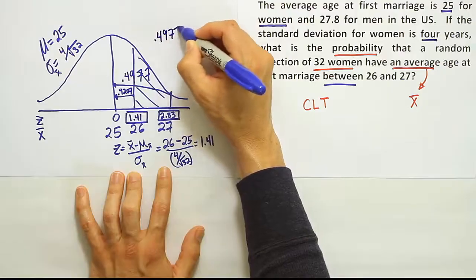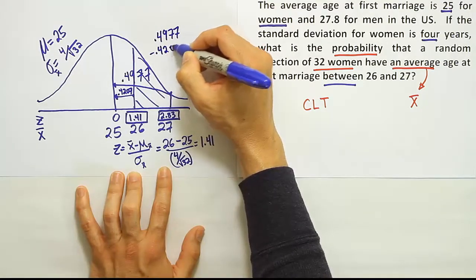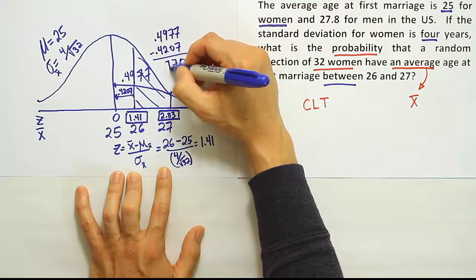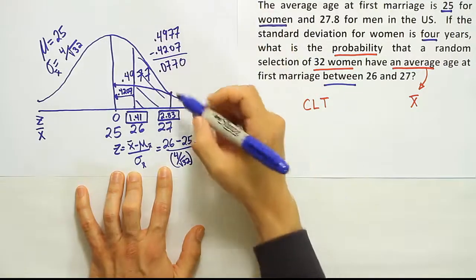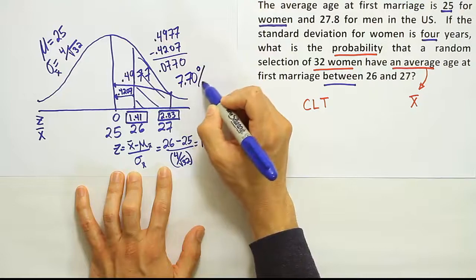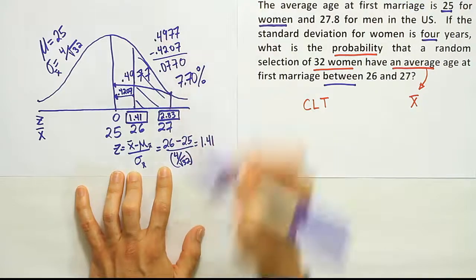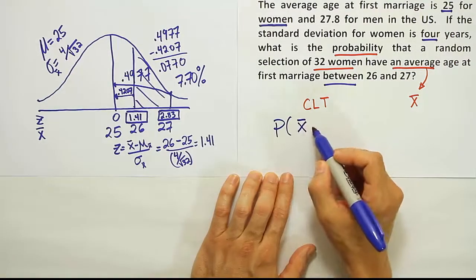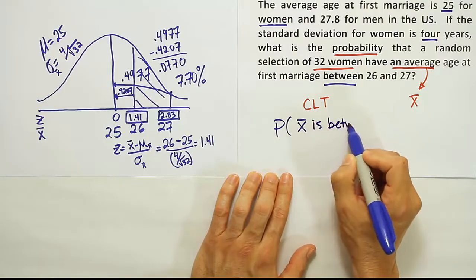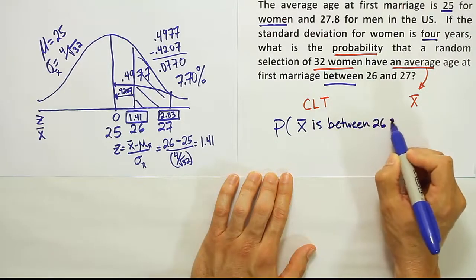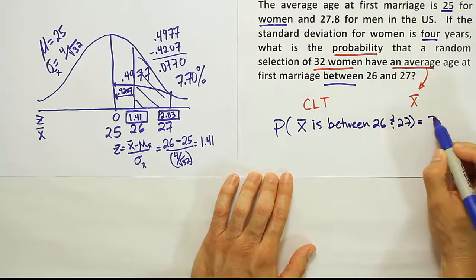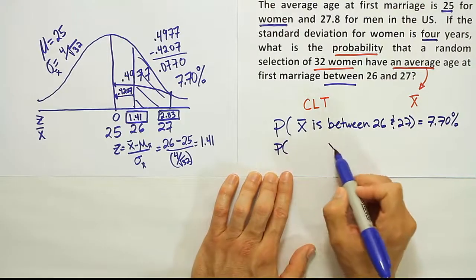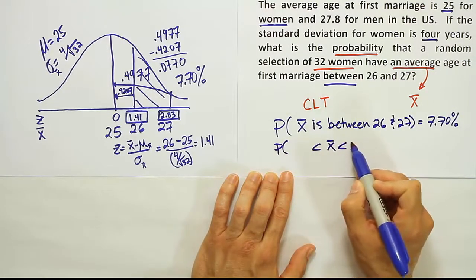So .4977 minus .4207. If I do the subtraction here, I get 0 here, 7, 2 from 9 is also 7, and then 0 again. So we get the answer .0770 as a decimal or 7.70%. Alright, so our final answer is the probability that the average height is between 26 and 27 is equal to 7.70%. Another way to write it would be to say the probability that x-bar is less than 27 but greater than 26 is equal to 7.70%.